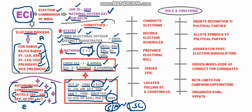The primary role of ECI is to conduct elections. Elections are vital for a democratic country as they embody the true spirit of democracy — that people elect their own representatives and that people are the rulers. This makes the Election Commission of India extremely significant.